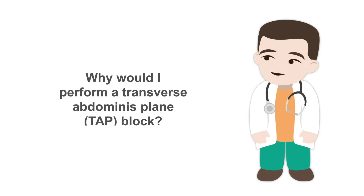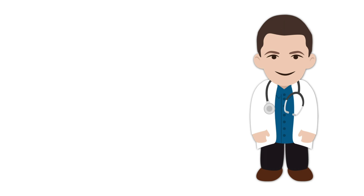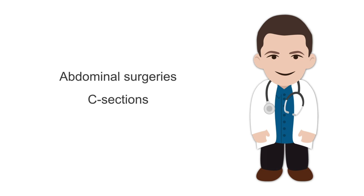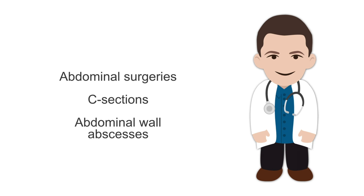Why would you perform a TAP block? This is a terrific block for abdominal surgeries such as hernia repairs located in the lower abdominal wall. There is also great evidence showing it is effective for C-sections, especially post-operatively. In the ambulatory setting, abdominal wall abscesses are prevalent — these are procedures you want to do quickly, using lidocaine for short procedures rather than longer-acting agents used for surgical or post-operative pain control.